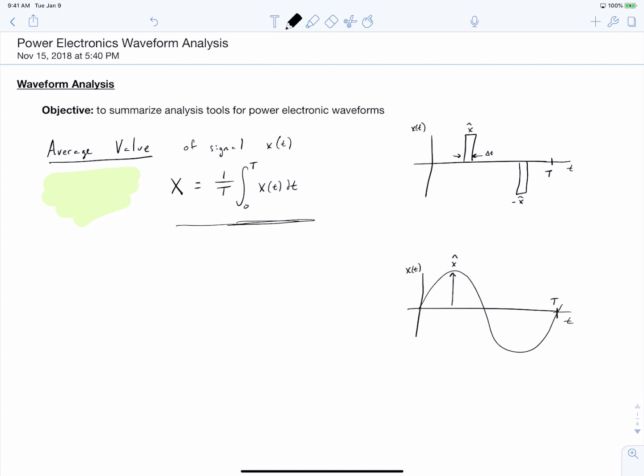So let's start by considering the waveform on the top right here, which is a square wave with a loaded duty cycle. We can calculate the average value based on the area under each of the rectangles. The first rectangle has an area of delta t x hat, the second rectangle has an area of delta t negative x hat.